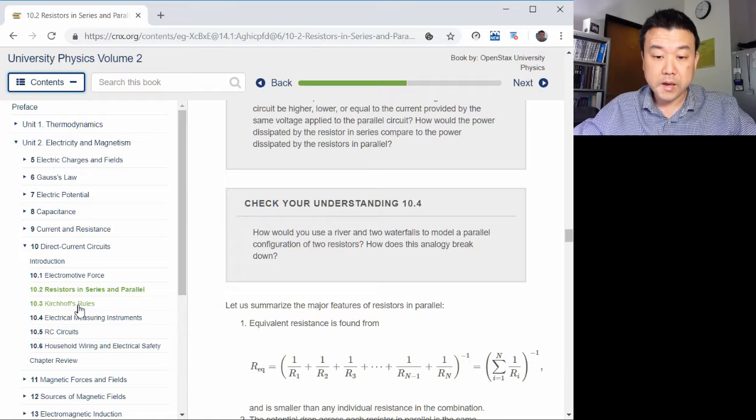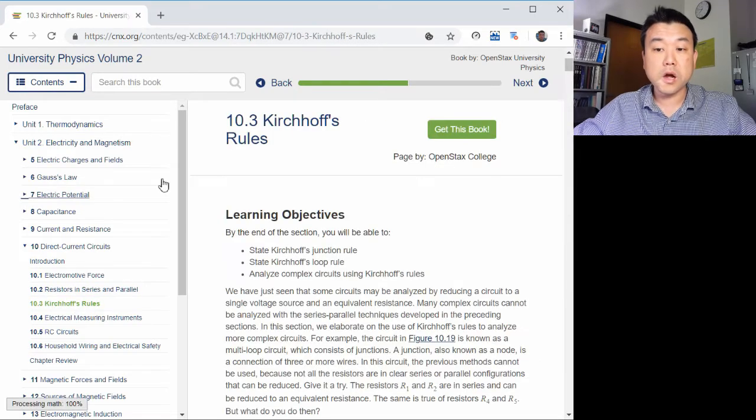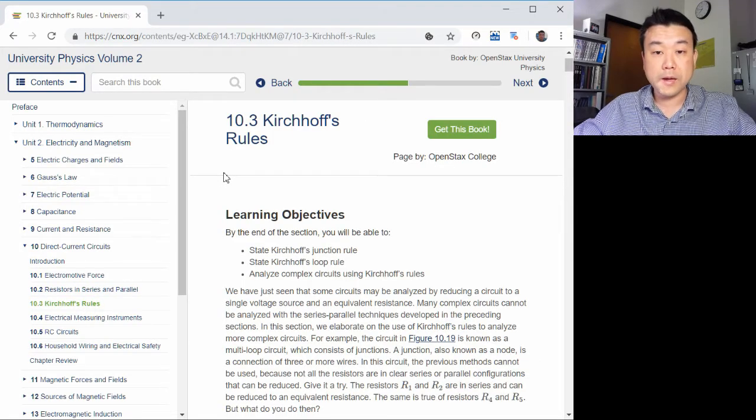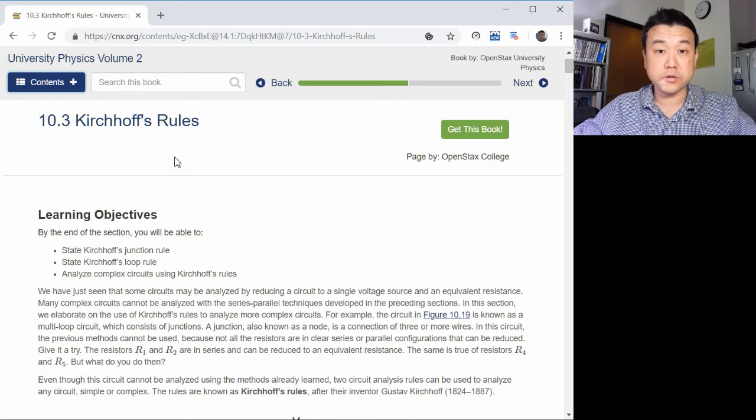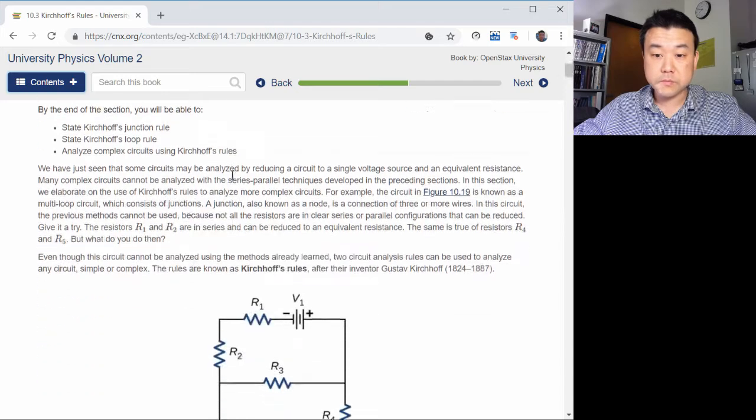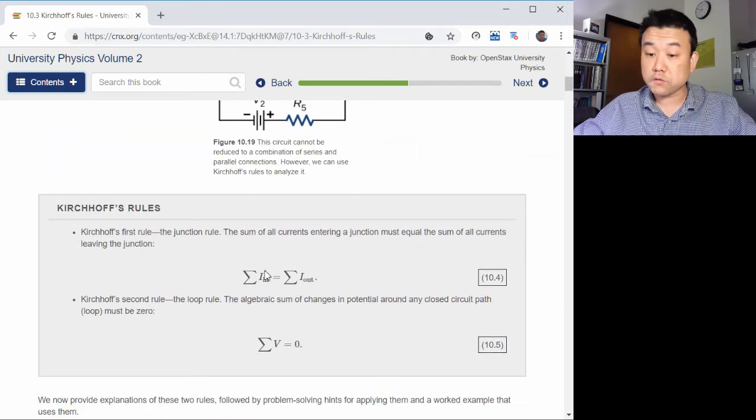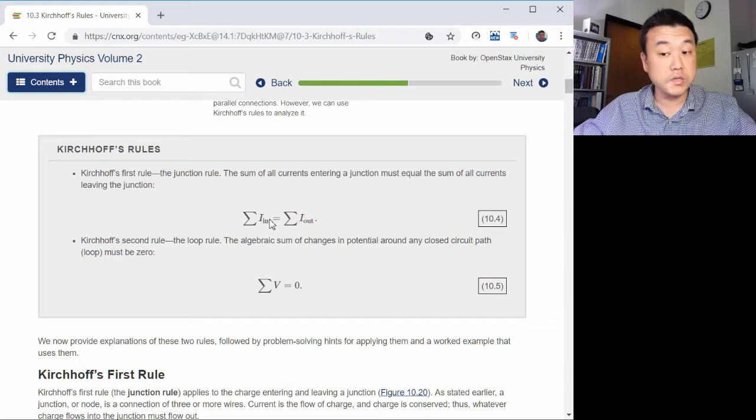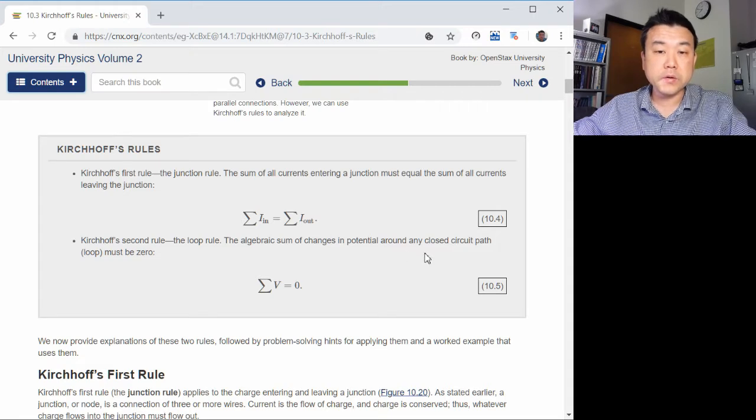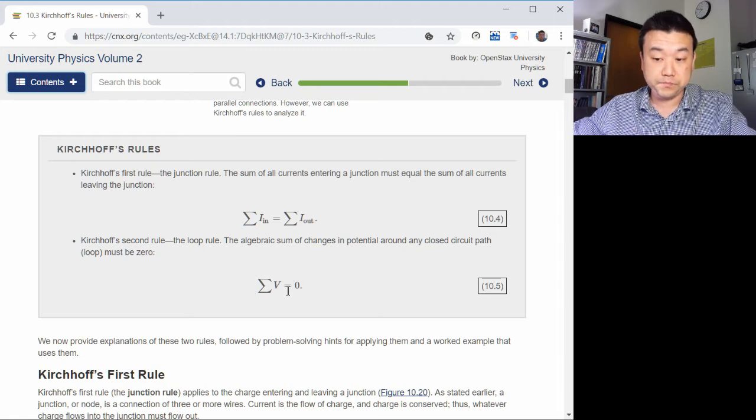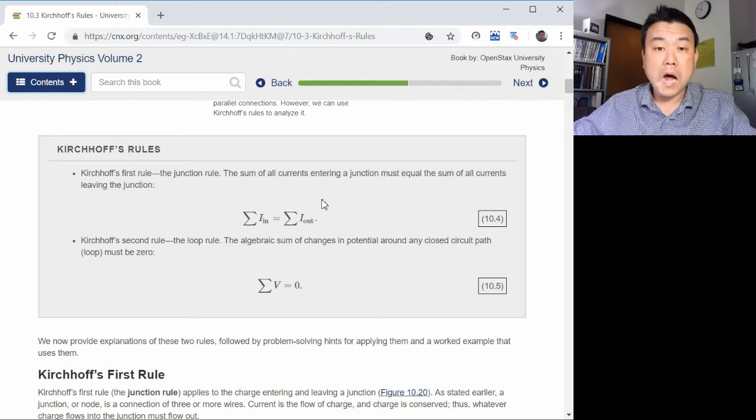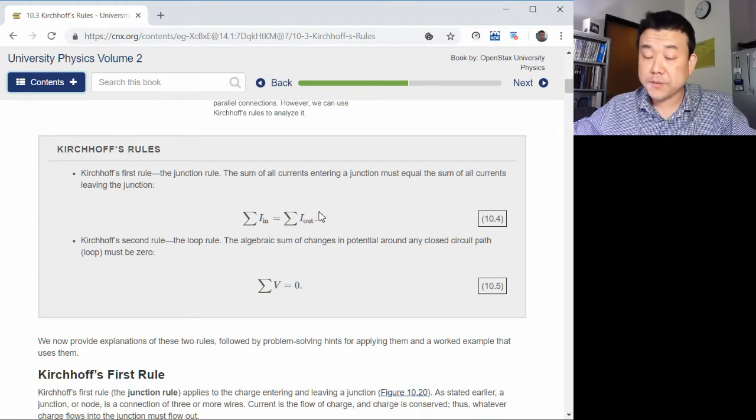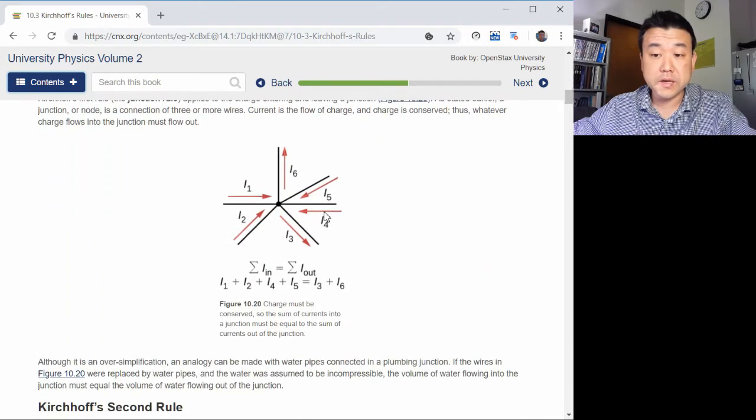Section 10.3 Kirchhoff's Rules covers the generalized problem-solving approach that can be used to solve any circuit. It starts with simple rules: junction rule and the loop rule. Junction rule says that all the current coming into a junction is equal to all the current going out. That's simply stating conservation of charge. And Kirchhoff's loop rule says that the sum of all the voltage changes around the loop is equal to zero. We call them junction rule and the loop rule. I hope these rules make sense. You've seen some aspects of this before. Junction rule is simply saying charges are conserved.